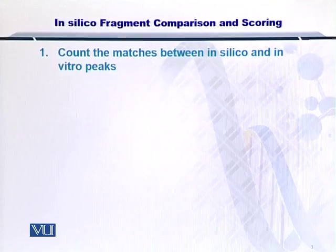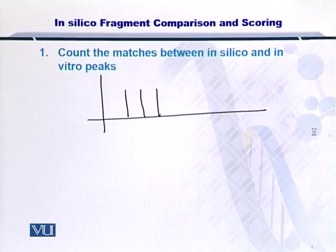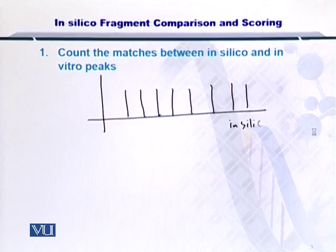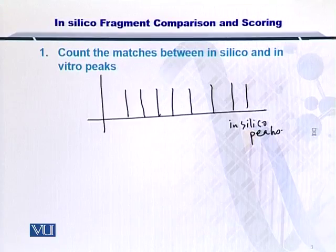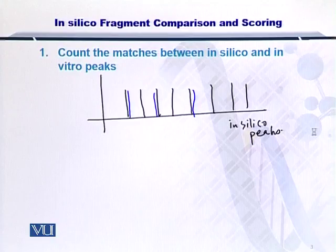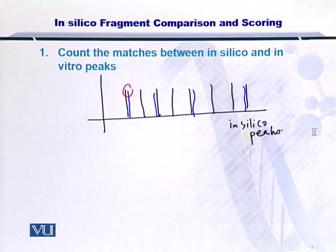First of all you have to count the matches between the in silico and the in vitro peaks. Let me draw some in silico peaks. These are the fragments that have been generated by fragmenting a protein in the protein database and arriving at the theoretical mass of the peptides. Now, in blue, I am going to draw some peaks that have been reported in the experiment. If you simply look at it, you can count 1, 2, 3, 4.